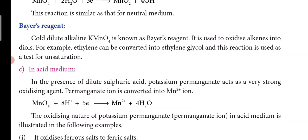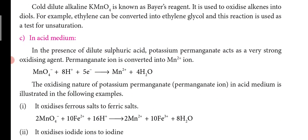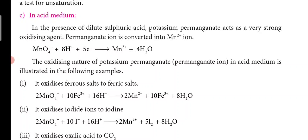For example, ethylene can be converted into ethylene glycol using Baeyer's reagent. This reaction is used as a test for unsaturation. In practicals, to identify whether a given compound is saturated or unsaturated: if it is saturated, the color change will not take place; if it is unsaturated, the pink color of potassium permanganate will change to brownish color, indicating that bond breaking and substitution are occurring.